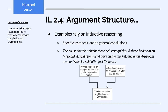Examples, on the other hand, rely on inductive reasoning, where specific instances lead us to general conclusions about the larger group you're trying to represent. For example, this simple argument states: the houses in this neighborhood sell very quickly. A three-bedroom on Marigold Street sold after just four days on the market. And a four-bedroom on Wheeler sold after just 36 hours. The claim is supported by specific examples — specific instances of houses that sold relatively quickly — so we call these examples and not premises.